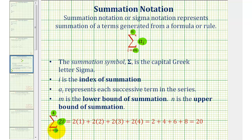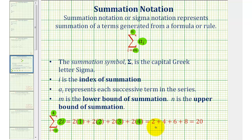When i is equal to one, we'd have two times one. When i is equal to two, we'd have two times two. When i is equal to three, we'd have two times three. When i is equal to four, we have two times four. We find the products, and then find the sum.